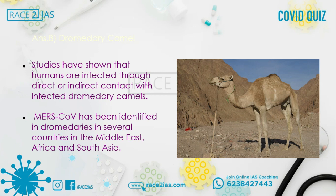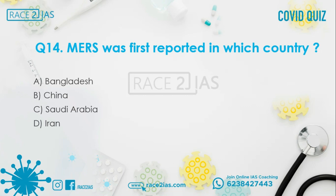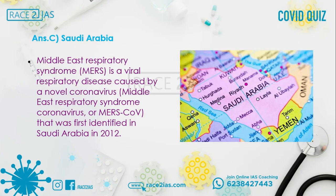Question number 14: MERS was first reported from which country? Option A: Bangladesh. Option B: China. Option C: Saudi Arabia. Option D: Iran. The right answer is Saudi Arabia. Middle East Respiratory Syndrome, or MERS, is a viral respiratory disease caused by a novel coronavirus, also called MERS-CoV, that was first identified in Saudi Arabia in 2012.